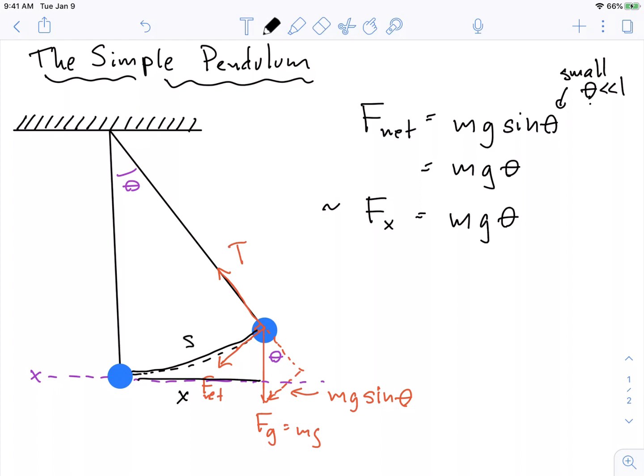So if I have a pendulum of length L, I can use my arc length formula, s is equal to theta L. And I can use the fact that s is really close to x to say that x is almost theta L. So we can use this to write Fx is equal to mg over L times x.